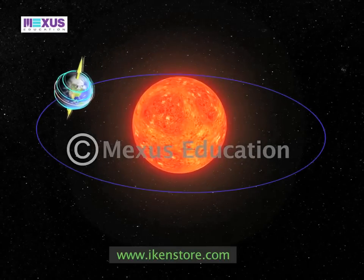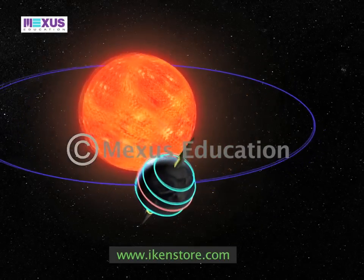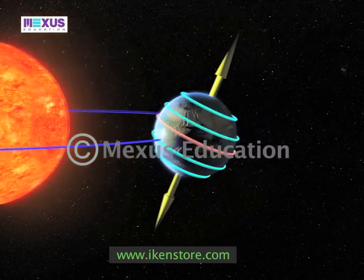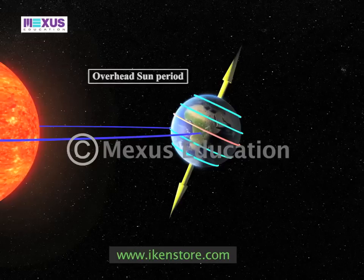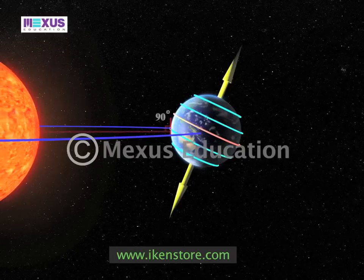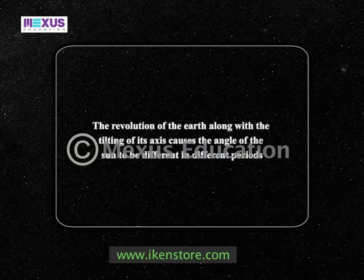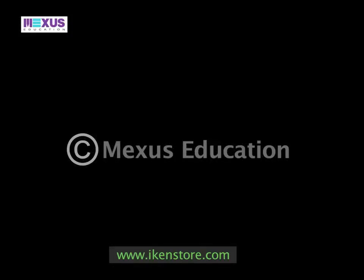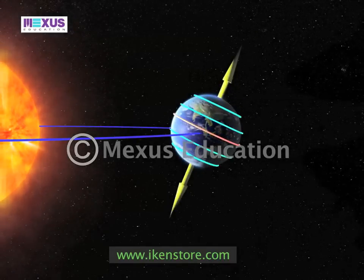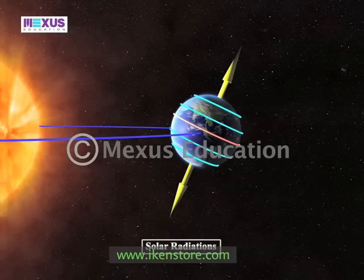The revolution of the earth, along with the tilting of its axis, causes the angle of the sun to be different in different periods. During the overhead sun period, when the sun is directly overhead the earth's surface, the earth and the sun form a 90-degree angle. The variations in the angle of the overhead sun cause variations in solar radiation received at different periods.